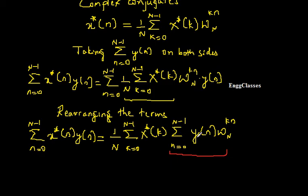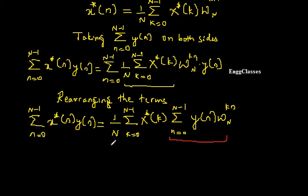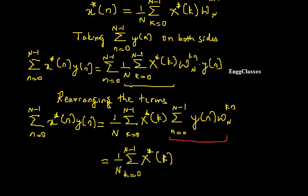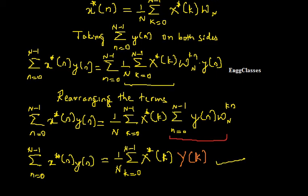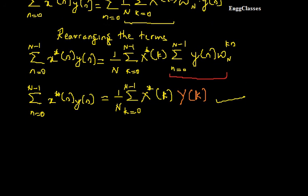That inner expression is the DFT of y(n), which equals Y(k). So substituting that in, the RHS becomes 1/N summation k=0 to N-1 of x*(k) Y(k). This matches exactly what we wanted. So we have proved: summation n=0 to N-1 of x*(n) y(n) equals 1/N summation k=0 to N-1 of x*(k) Y(k). Next I'll consider the corollary of that.